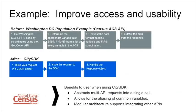So what do we mean by improved access and usability of census data? The gray boxes on the top of this slide show what it would take to get Washington DC population with our public API, which is super powerful. But oftentimes you have to be a census expert to understand all the nuances. You'd have to get Washington DC's FIPS code, determine the appropriate variable from the ACS — which has many variables — then request the data for the specific variable and the FIPS in combination, and then extract the data to get your response.